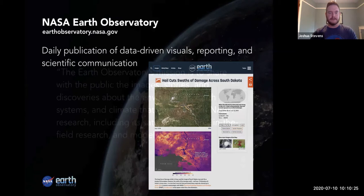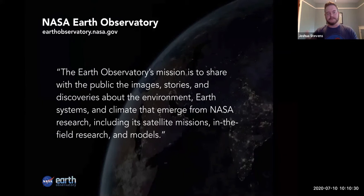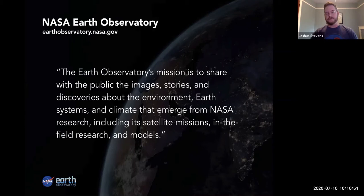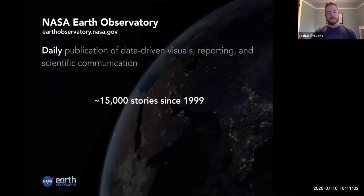The boilerplate mission statement basically explains that the mission is to share the stories and discoveries about the environment, Earth systems, and climate that emerge from NASA research, including satellite missions, field research, and models. A lot of people don't realize that NASA obviously builds spacecraft and has satellites in space, but there are also researchers checking ice cores or going out on research vessels — doing things from both the ground and in space and everything in between. The Earth Observatory has been up since 1999, and since then they've put out 15,000 stories with visuals and reporting.